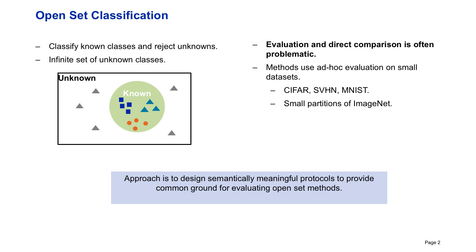We tackle the task of open set classification, where a model should correctly classify samples from known classes while rejecting samples from unknown classes that only appear at test time. Typically, the evaluation of open set methods is difficult since the set of unknown classes is infinite. Additionally, the comparison between the performance of algorithms is problematic, given that many methods build ad-hoc evaluation approaches and datasets to emulate known and unknown classes.